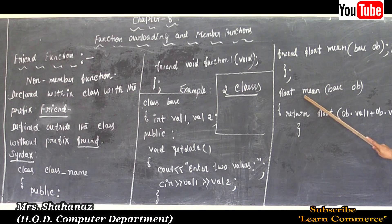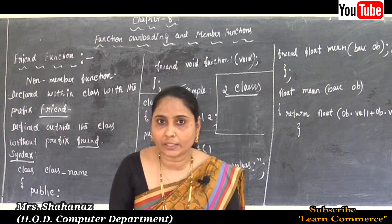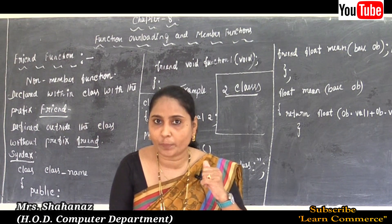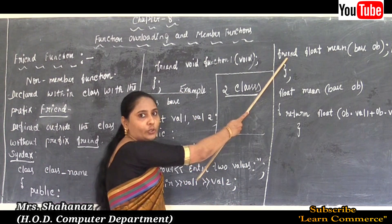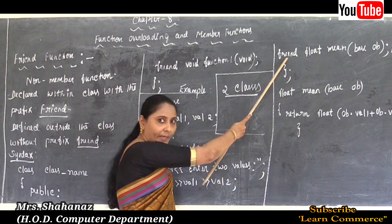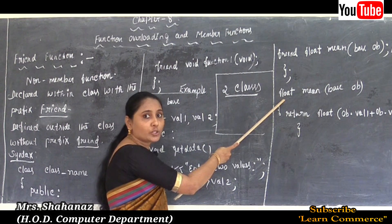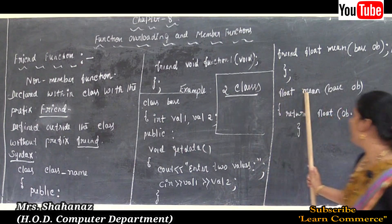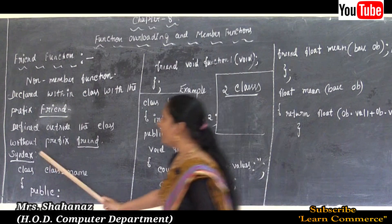While going to declare the friend function, we use the prefix keyword 'friend' inside the class. But it should be defined outside the class without the prefix 'friend'. While going to define it, we define the friend function like a normal function but without the prefix 'friend'.